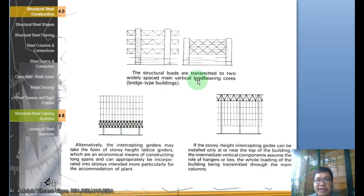The structural loads are transmitted to two widely spaced main vertical load bearing cores for bridge type buildings. As you can see here, the triangular patterns - this is the support of the bridge. Alternatively, the intercepting girders may take the form of story height lattice girders which are economical means of constructing long spans and can appropriately be incorporated into stories intended particularly for the accommodation of plant. If the story height intercepting girders can be installed only at or near the top of the building, the intermediate vertical components assume the role of hangers or ties, the whole loading of the building being transmitted through the main columns.